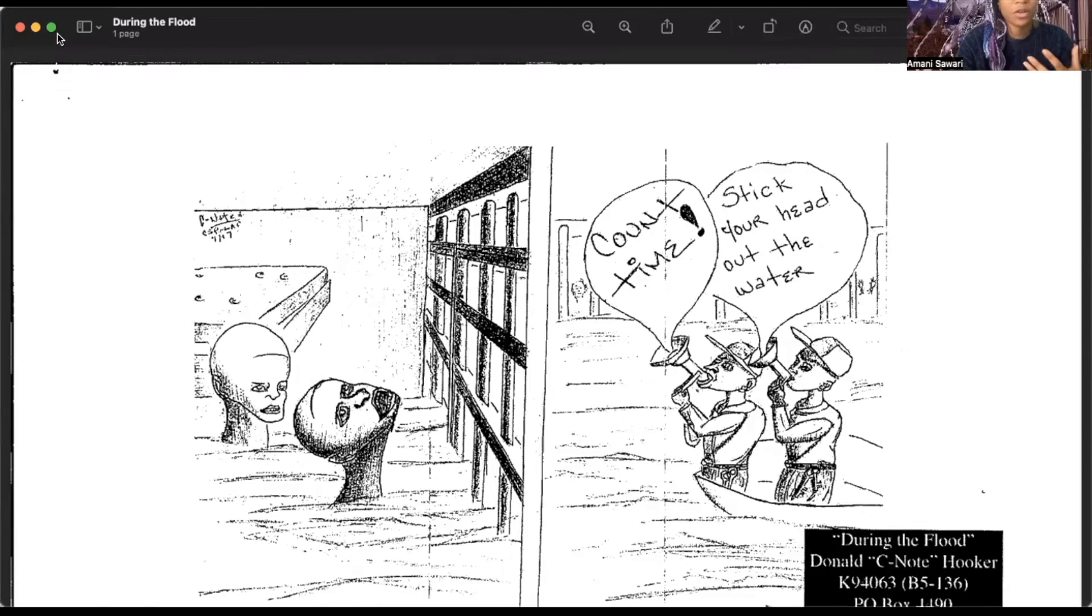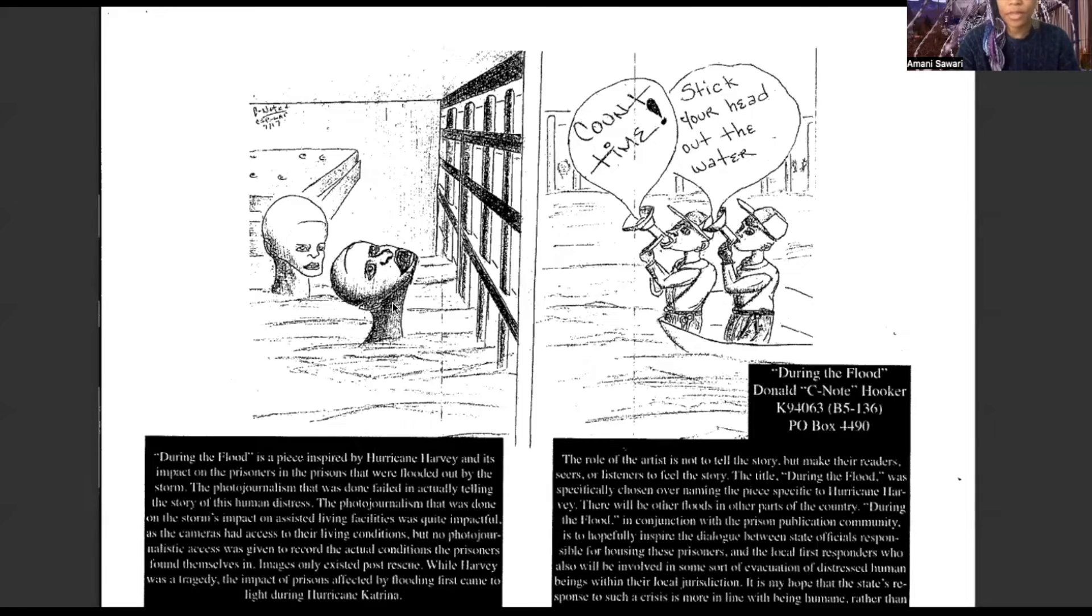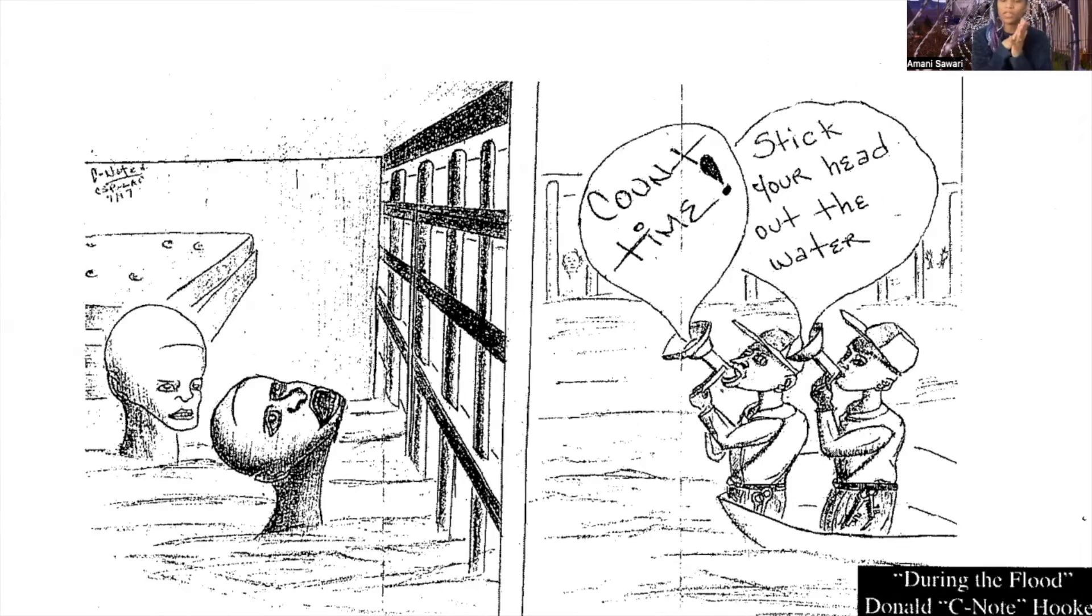Let's take a moment to look at some artwork. Let's reflect on some artwork and I'm going to zoom into the artwork. This was drawn by Donald C. Note Hooker and he is in San Quentin Prison in California.